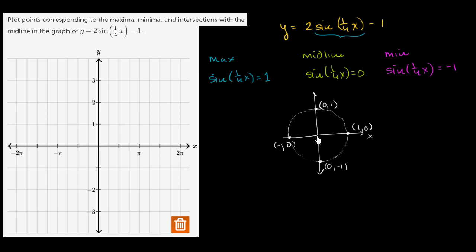Starting with an angle of 0 radians, we intersect the unit circle at the point (1, 0). The sine evaluated there is the y-value, so sine of 0 radians equals 0. This happens not just at 0 radians, but at any integer multiple of 2π plus 0 radians — so whenever the input to sine equals 0 plus some multiple of 2π.